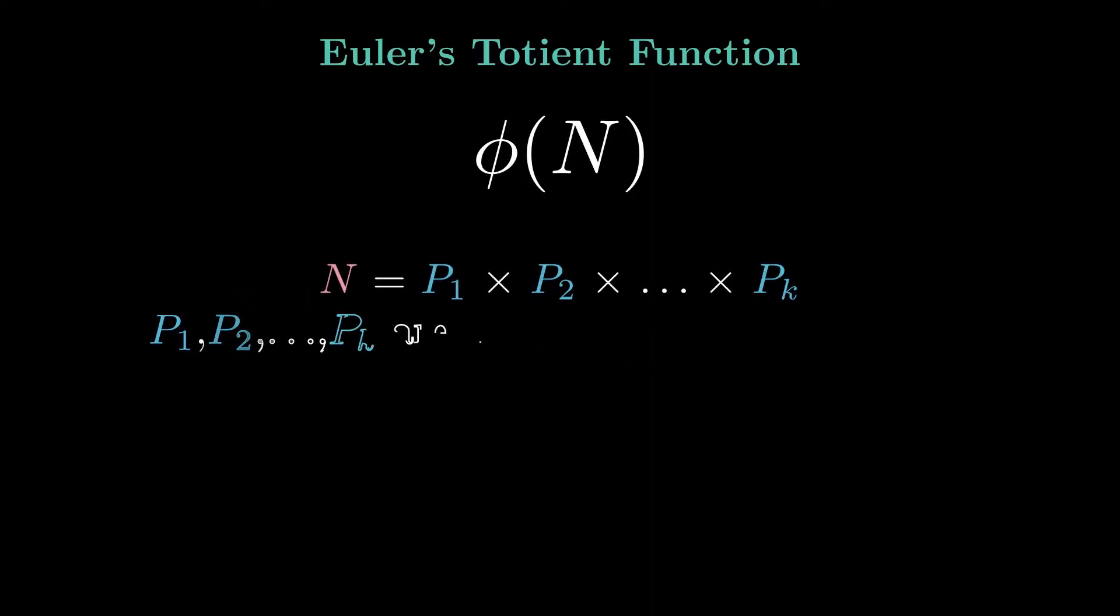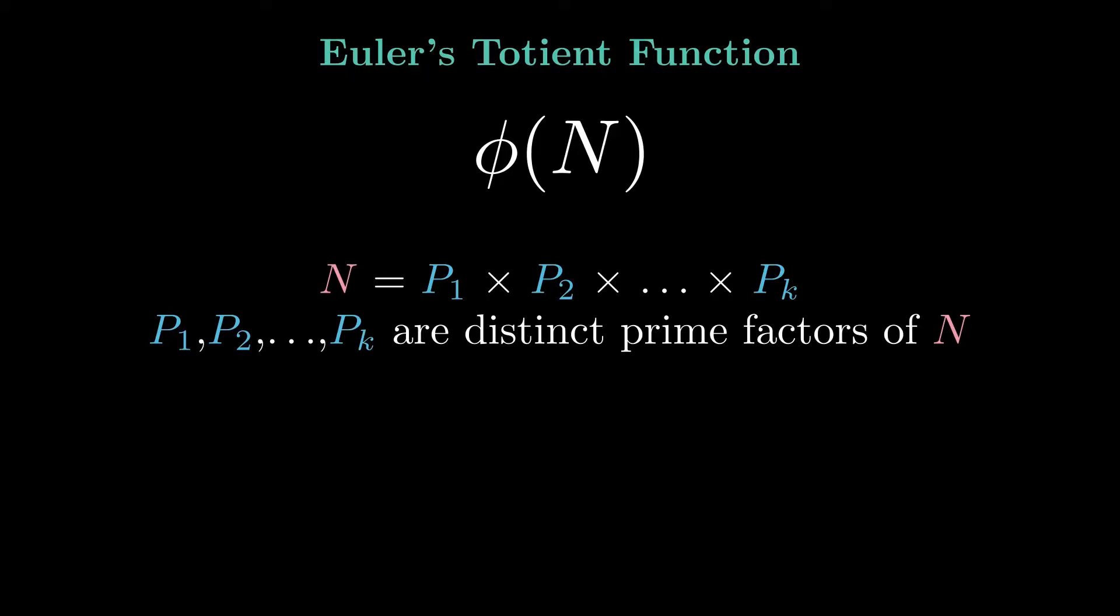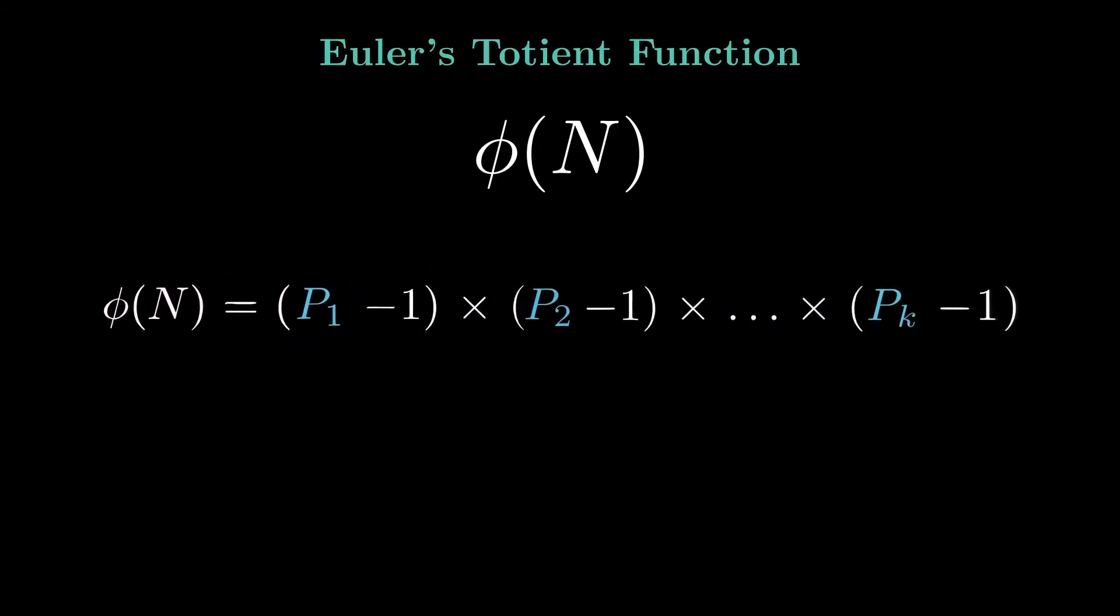If n is the product of k distinct prime numbers, the Euler's totient function of n is the product of each of these primes minus 1.